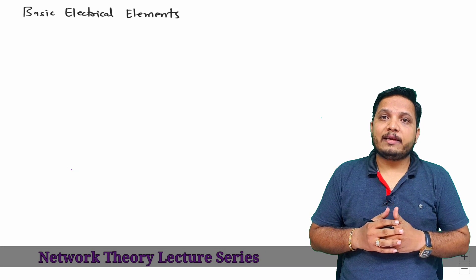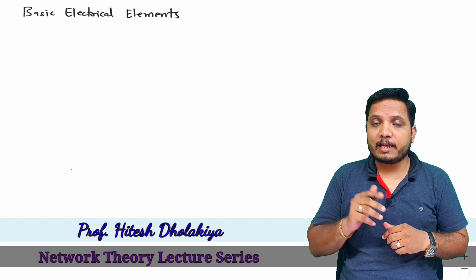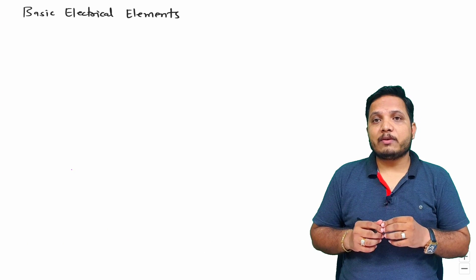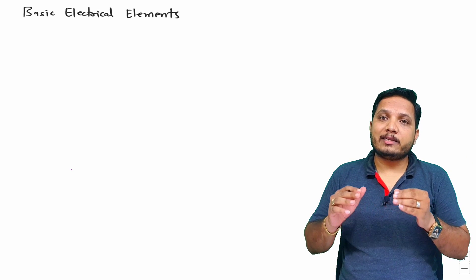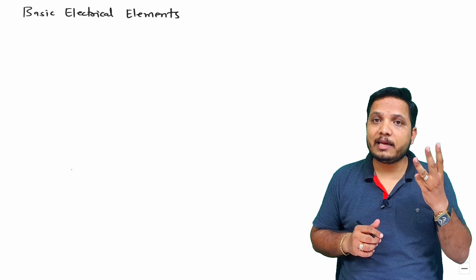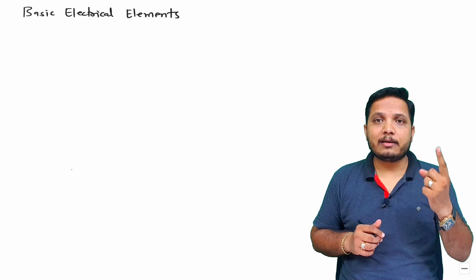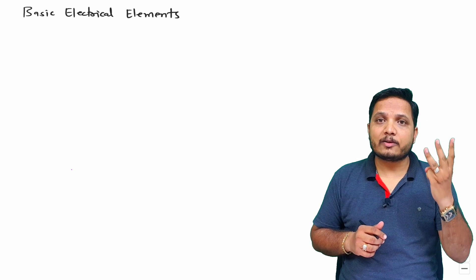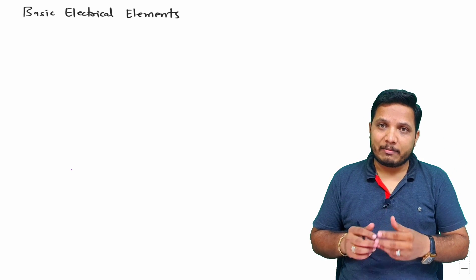Welcome to the Network Theory lecture series. Professor Dolakia is going to explain basic electrical elements. When you want to form any electrical network, it is essential to know the basic electrical elements. There are three major basic electrical elements: resistor, inductor, and capacitor. Using these three elements, we can form any electrical network.